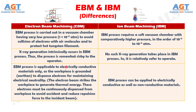Number 8. Electron Beam Machining process is applicable to electrically conductive materials only, as the workpiece is grounded to dispense electrons for maintaining electrical neutrality. The electron beam strikes the workpiece to generate thermal energy, and these electrons must be continuously dispensed from the workpiece to avoid accidents and reduce repulsion force to the incident beam. Whereas, Iron Beam Machining process can be applied to electrically conductive as well as non-conductive materials.